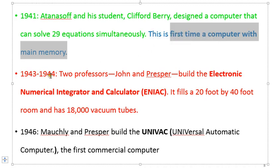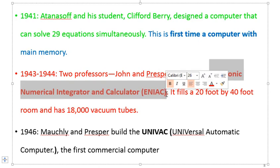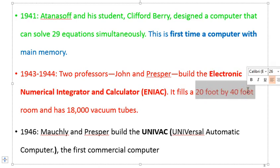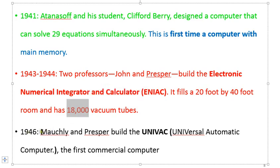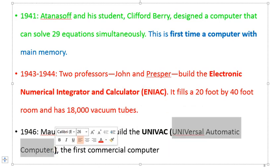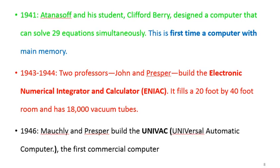Between 1943 and 1944, two professors, John and Presper, built what they called the Electronic Numerical Integrator and Calculator — ENIAC. It was electronic in nature but very large, occupying a space of 20 by 40 feet of a room, and used up to 18,000 vacuum tubes. Nevertheless, it was an electronic computer. In 1946, Mauchly and Presper built UNIVAC — Universal Automatic Computer — the first commercial computer sold to the public. All previous ones were used at research institutions and government establishments.